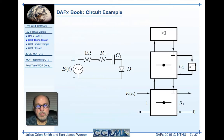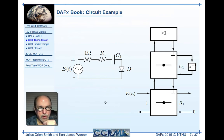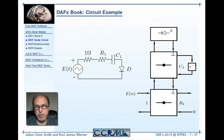Here is the example used in the DAFx book — a diode circuit. There is a diode, a capacitor, and a resistor. The voltage source has a one-ohm internal resistance. Here is the Wave Digital Filter for that circuit. The diode is non-linear, so it has to go at the root.